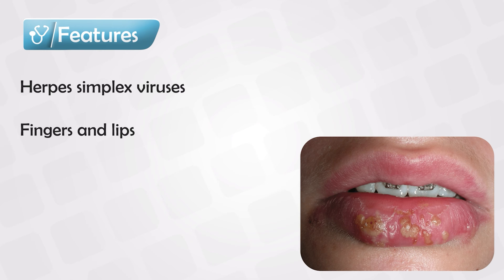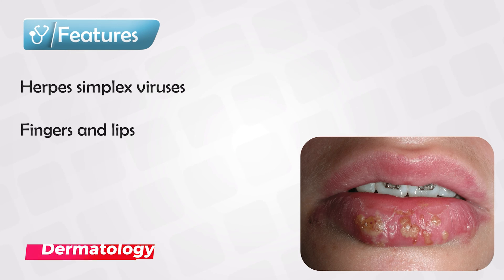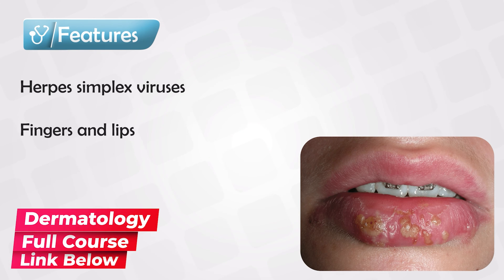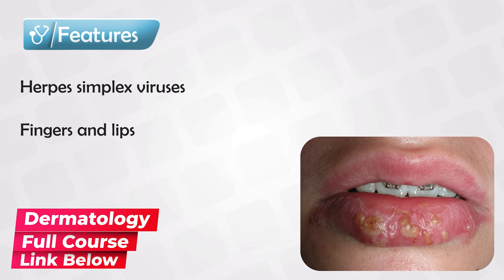They are most commonly seen on the hands and the mucosal membranes. They are also commonly seen in the genital area, where they are known as herpes labialis and herpes genitalis.